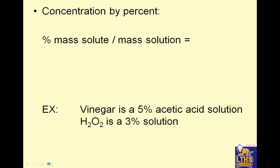Concentration by percent. Percent is just mass of solute over mass of solution times 100%. So again, it's part over total times 100%, but we're just going to do it in mass. So vinegar is 5% acetic acid solution, which means I have five grams of acetic acid for every 100 grams of total solution. Same thing is true. This is hydrogen peroxide, which you put in your boo-boos if you get a cut.